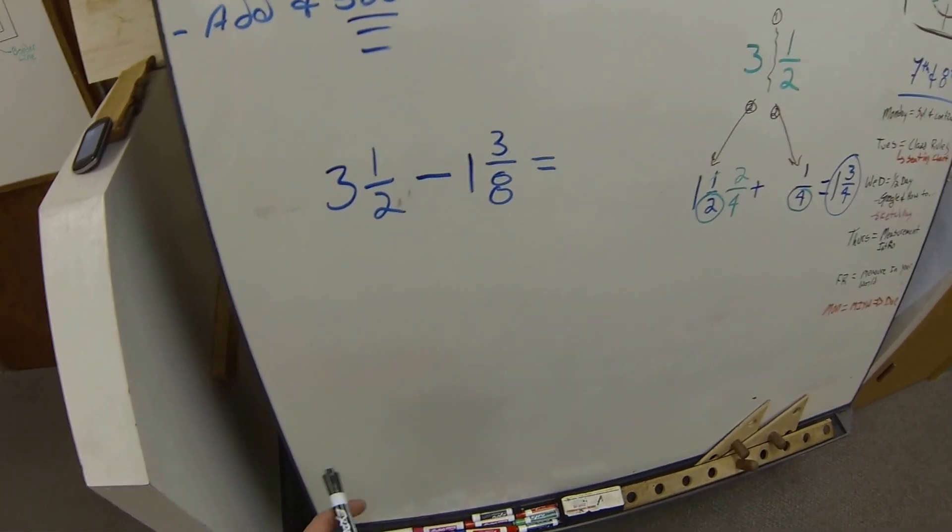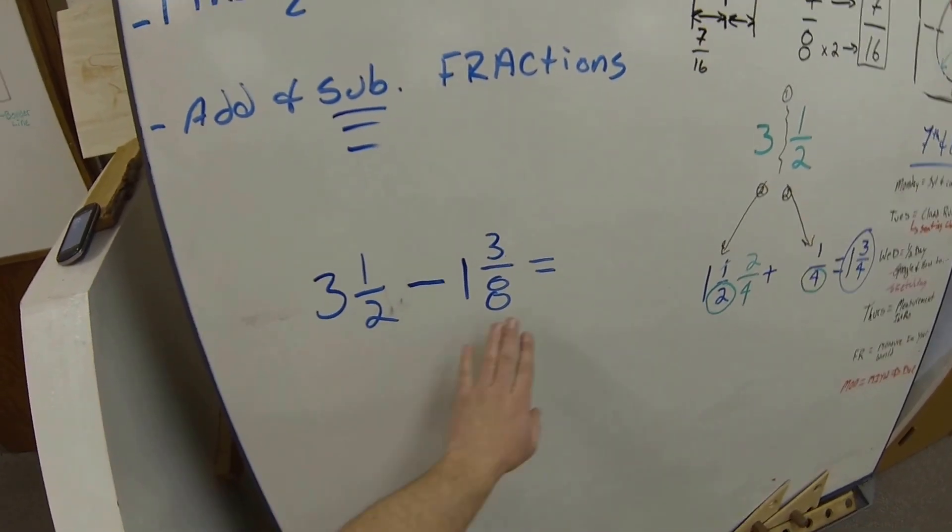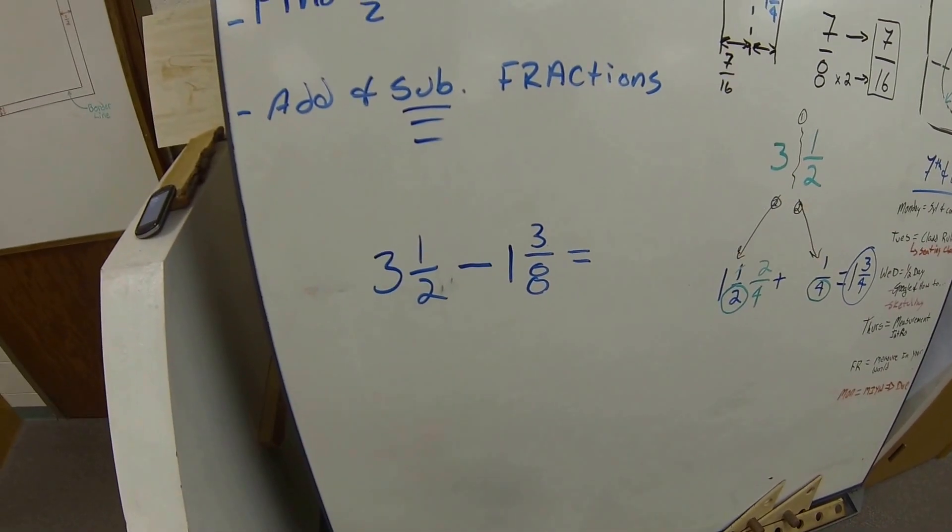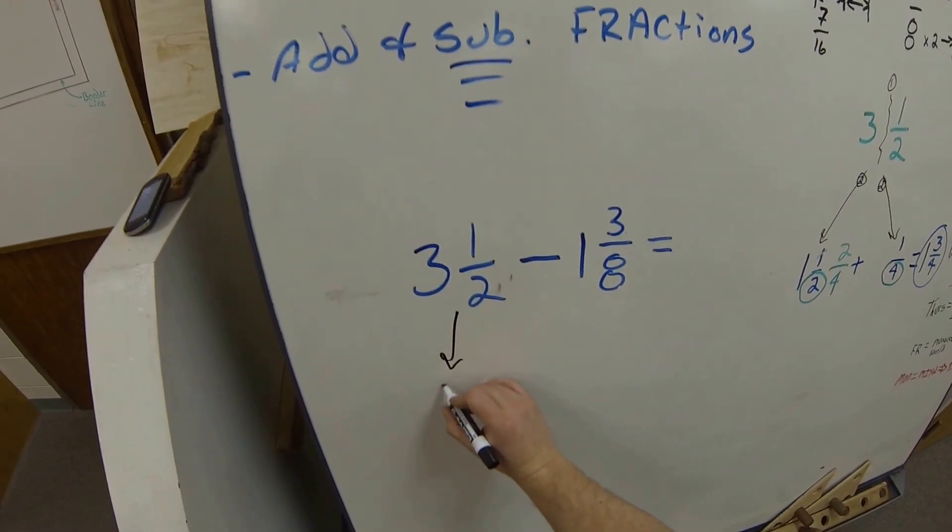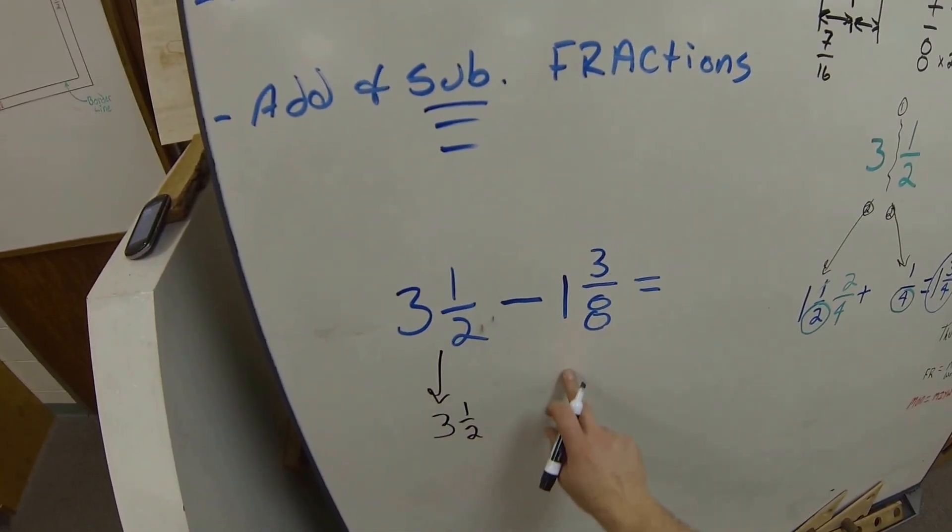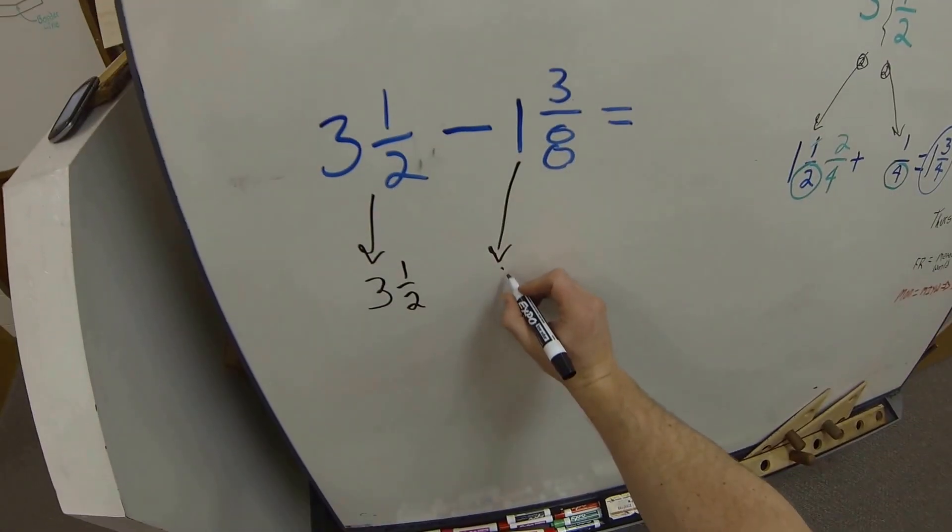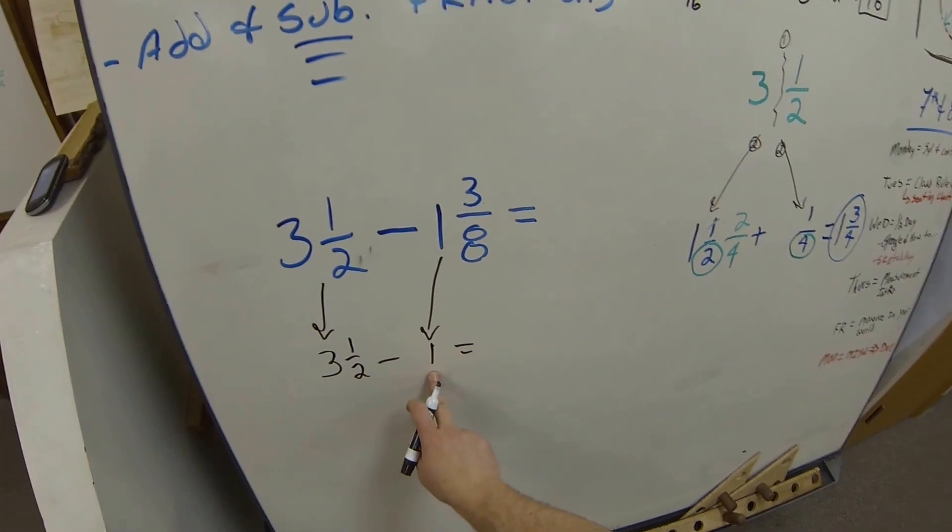And what does that equal? Well, in business and in construction, you need to be able to do this so you can figure out quantity left over of materials to make sure that you have enough for the next project. One method of doing this is I'm going to pull the 3½ down, and I'm going to pull this 1 out.